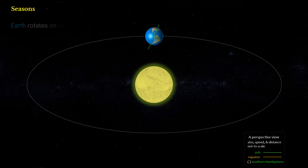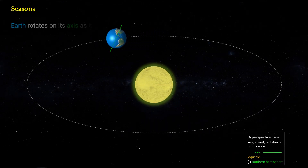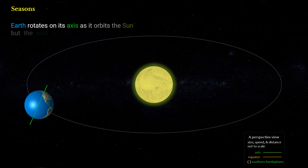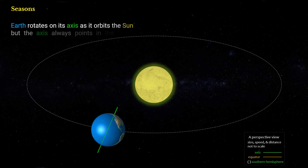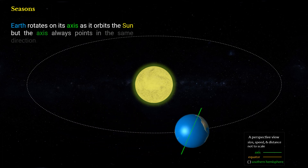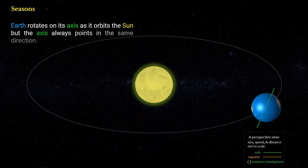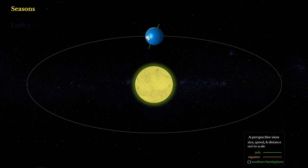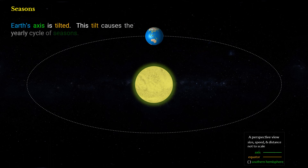Earth rotates on its axis as it orbits the Sun, but the axis always points in the same direction. Earth's axis is tilted, and this tilt causes the yearly cycle of seasons.